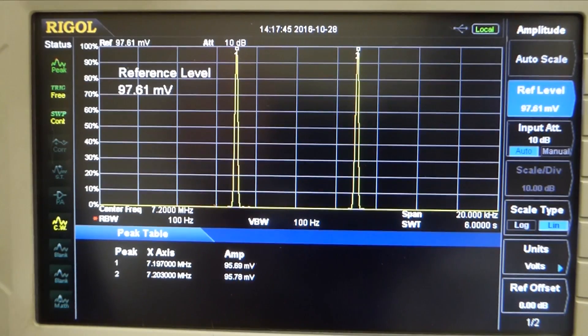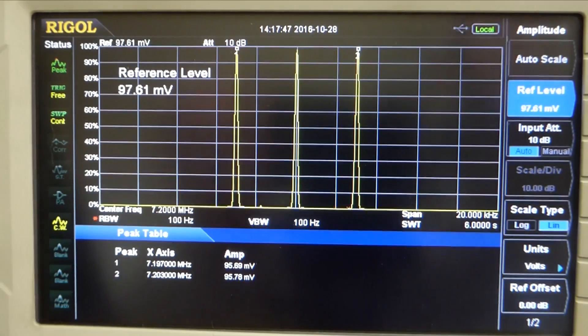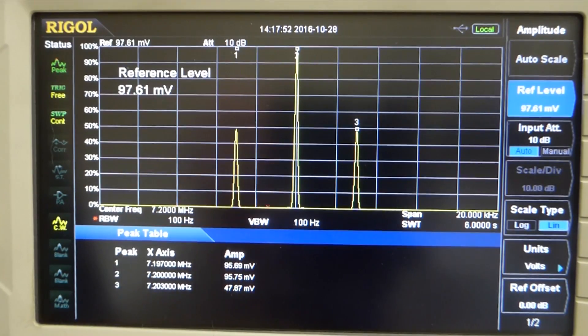I'll re-inject the carrier. Now the spectrum analyzer is sweeping at 6 seconds per division here, so that's why it takes time for the screen to refresh here. So now we're back to the AM carrier.